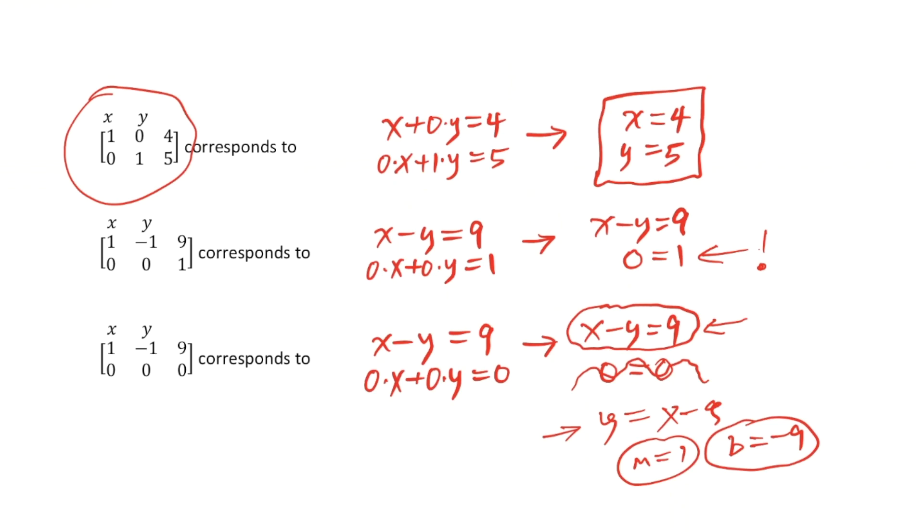Well, in our next section here we're going to start talking about starting with the augmented matrix of a system and performing what we call elementary row operations on that matrix to finally get it into a form where we can read off or figure out what the answer or the solutions to the system actually are.